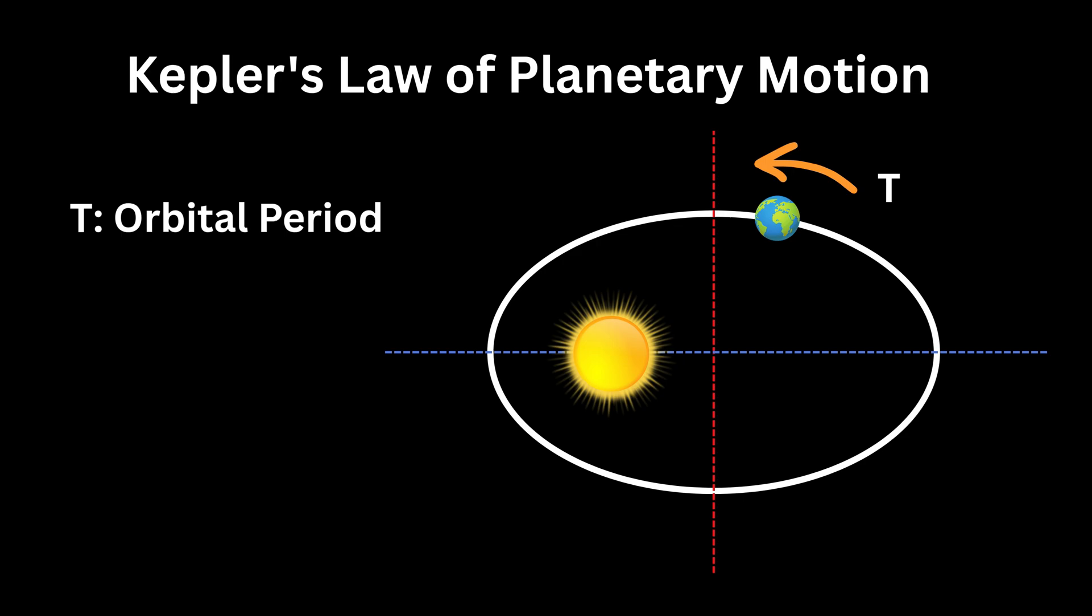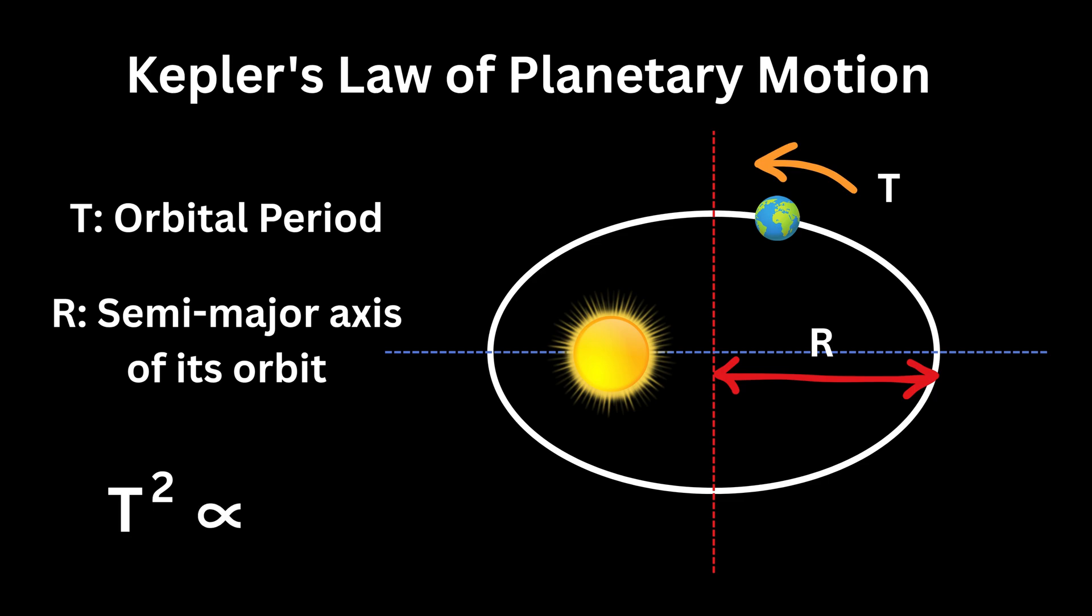and R stands for the average distance of the planet from the sun, measured as the semi-major axis of its elliptical path or this distance, the law says that the square of T is proportional to the cube of R.